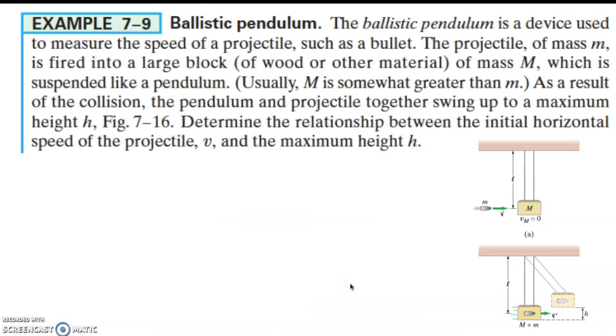So a ballistic pendulum. The ballistic pendulum is a device used to measure the speed of a projectile such as a bullet. The projectile mass m is fired into a large block of mass big M, which is suspended like a pendulum. As a result of the collision, the pendulum and projectile together swing up to a maximum height.